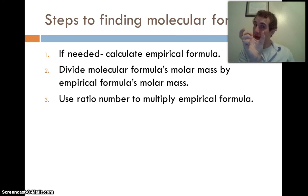And then, once you've got that formula, if you need to, you can find its molar mass. Now, this molar mass is going to be the small mass. So we're going to take the molecular formula's molar mass, the big mass, and we're going to divide it by the empirical formula's molar mass. This is going to give us a number, a whole ratio. We're going to take that ratio number, and we're going to multiply it through the empirical formula.